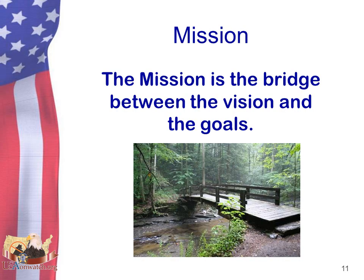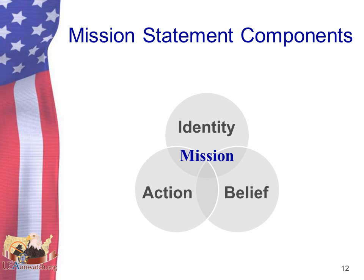The mission is the bridge between the vision and the goals. It's a statement of how you or your group will conduct your business, and it's a statement of understanding that guides and focuses your plan and your activities. The mission statement consists of three primary parts: identity, belief, and action. The identity is the statement of who you are. The belief portion is tied directly to your vision — it's a statement of your beliefs or the beliefs of your group. The action portion is a general statement of what you're going to do. On page 8 of your participant book, answer the questions and fill in the chart under the section 'Mission.'